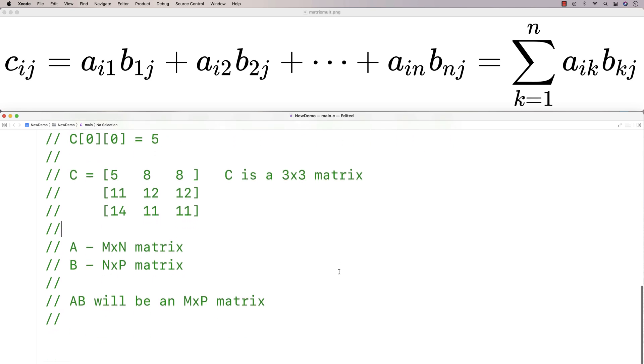Now in order to perform matrix multiplication, the column dimension of A must be the same as the row dimension of B. Let's try to implement matrix multiplication in C now.